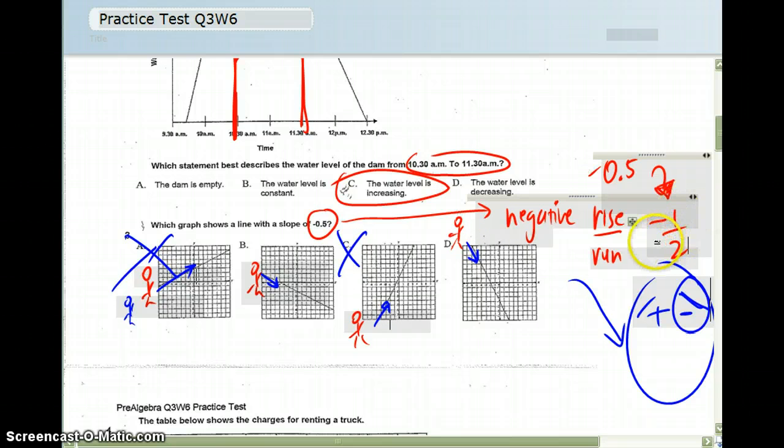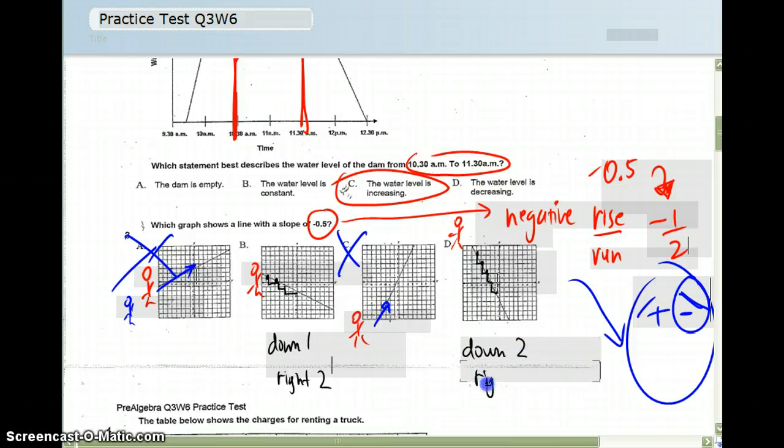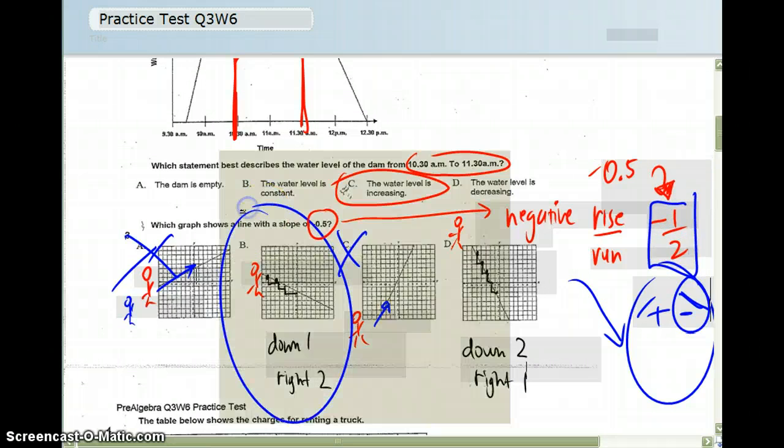Because the slope is negative 1 over 2, when I go, I am going to basically create stairs. I am going to look for the rise and the run. It looks like you are going down 1, right 2. If I look at this graph, it looks like I am going down 2 and right 1, so I am looking for negative 1/2, and negative 1/2 is down 1, right 2, so that would be the answer B right there.